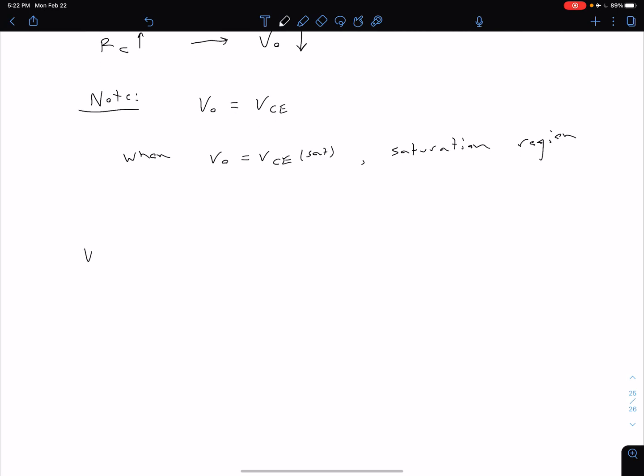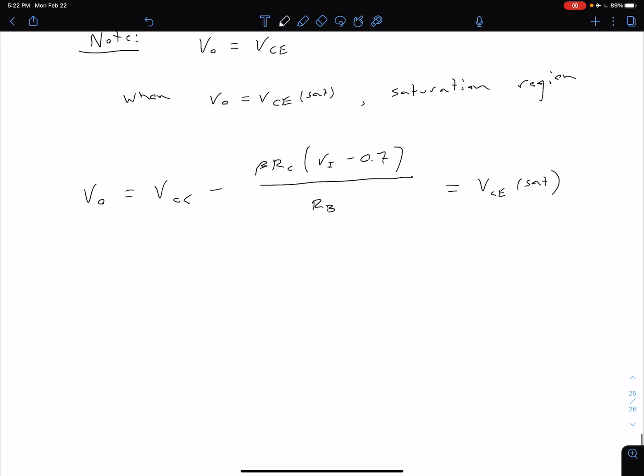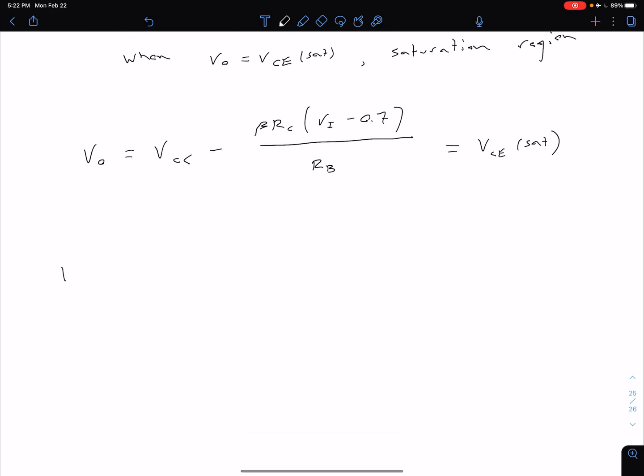We can say our Vout with our equation above which was VCC minus the beta RC times VI minus the 0.7 divided by RB, we want to set that equal to our VCE sat. Keeping things general for just one more line, we can rearrange that and solve for our input voltage which is going to be equal to VCC minus VCE sat that quantity times RB divided by beta times RC plus 0.7.